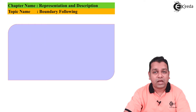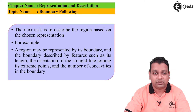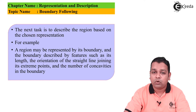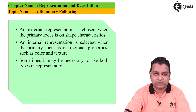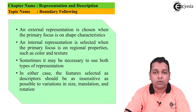The next task is to describe the region based on the chosen representation, hence these two terms are taken together as the chapter title. For example, a region may be represented by its boundary and the boundary described by features such as length, the orientation of the straight line joining its extreme points, and the number of concavities in the boundary. An external representation is chosen when the primary focus is on shape characteristics, and an internal representation is selected when the primary focus is on regional properties such as color and texture.